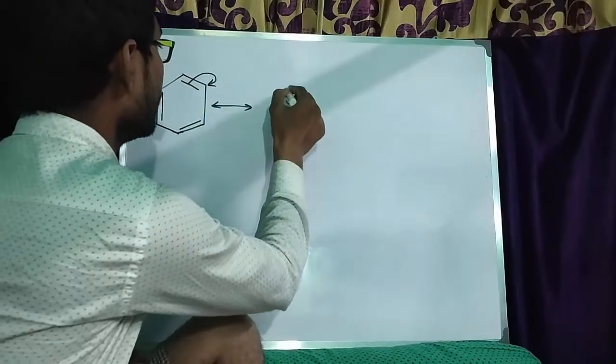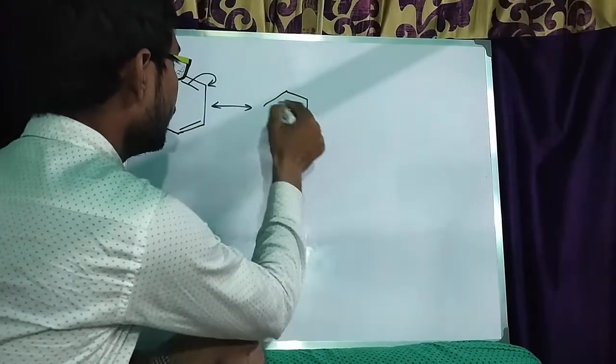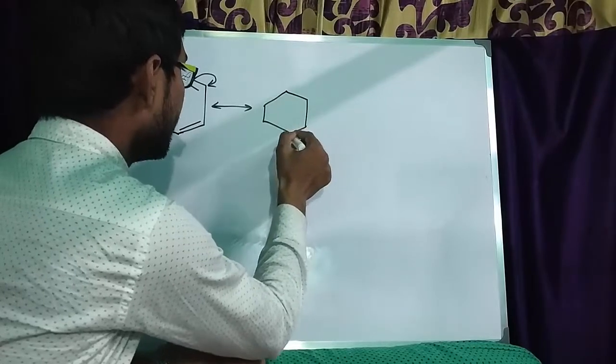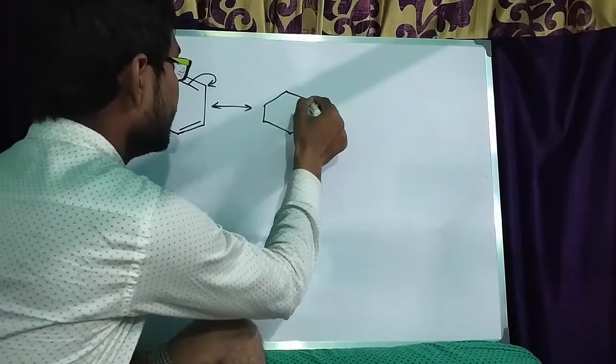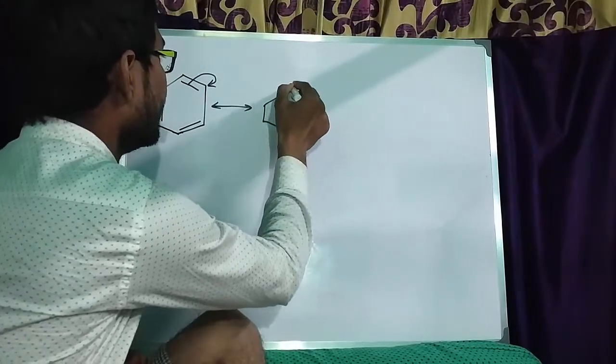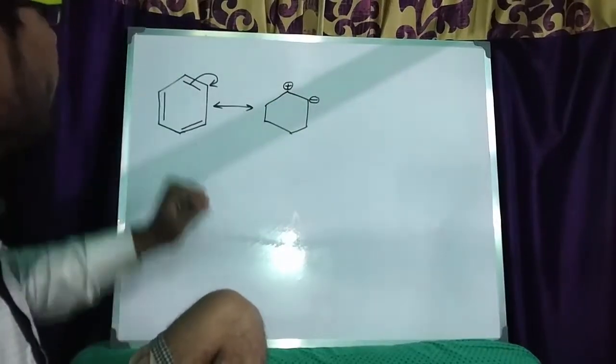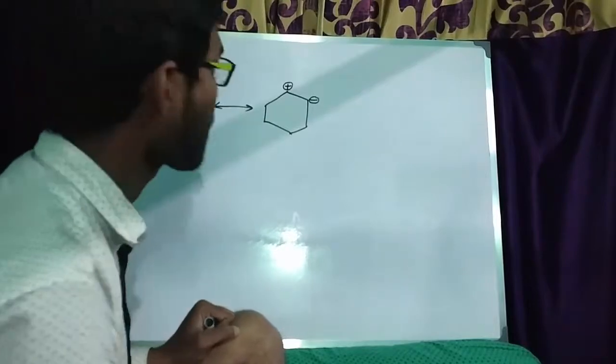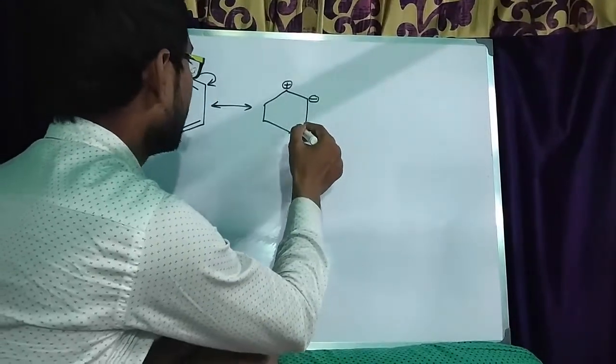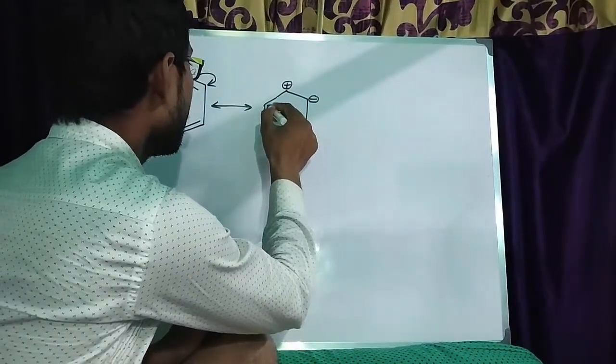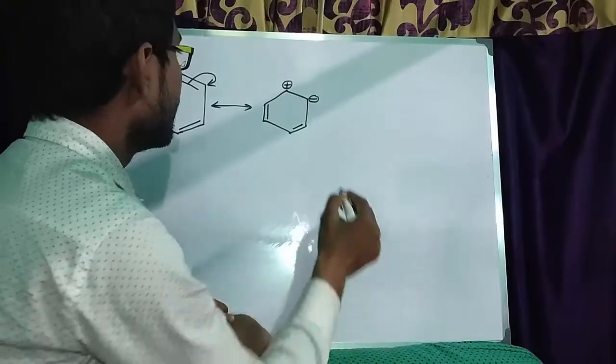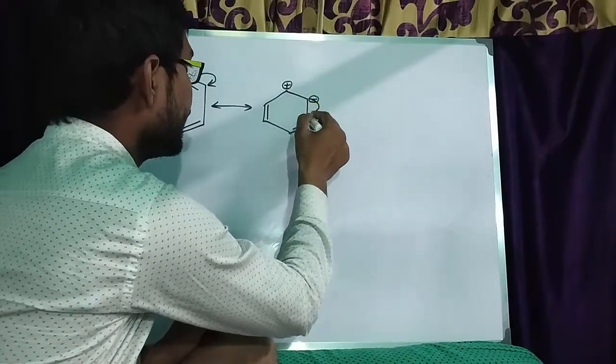So, what will happen here? And here, this will be negative charge and there will be positive charge, as this carbon loses the electron. So, other bonds will be in the same position. And this negative charge will create a new bond.